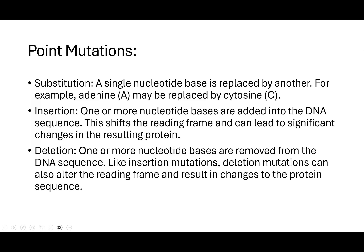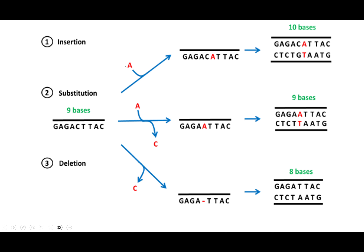In deletion, one or more nucleotides are removed from the DNA sequence, which also causes a frameshift mutation. Looking at insertion now: we have nine bases — guanine, adenine, guanine, adenine, cytosine, thymine, adenine, cytosine — and if we insert a base 'A' between the C and the T, a complementary base T is added on the opposite strand. We end up with ten bases total. That's insertion mutation.